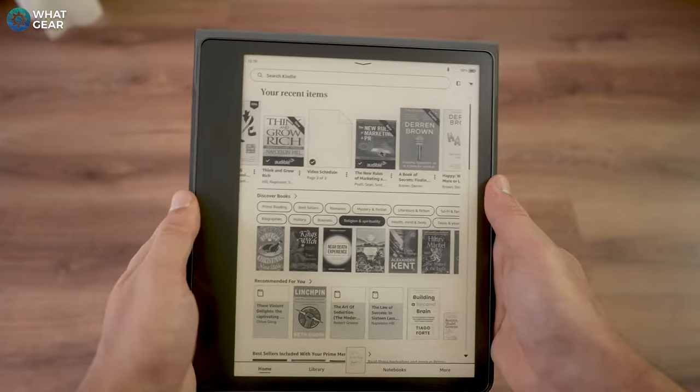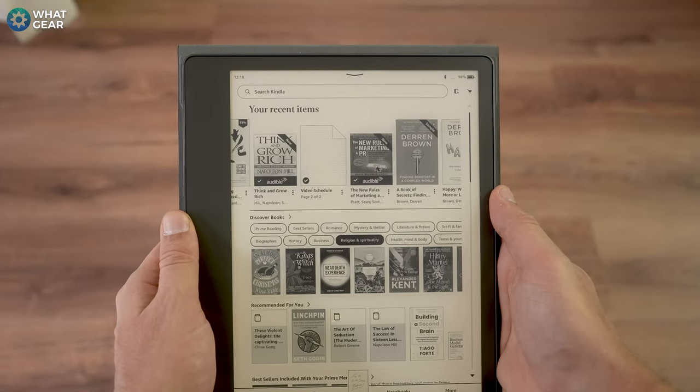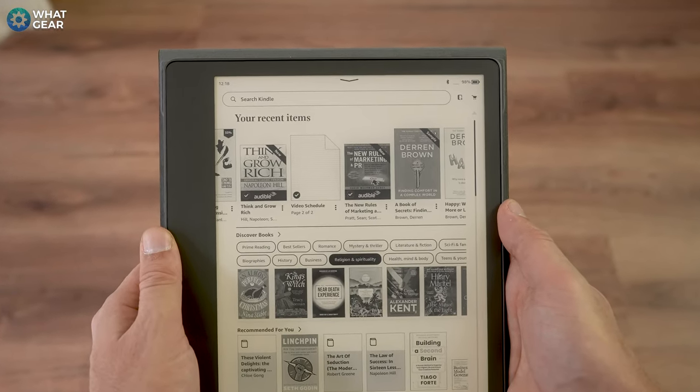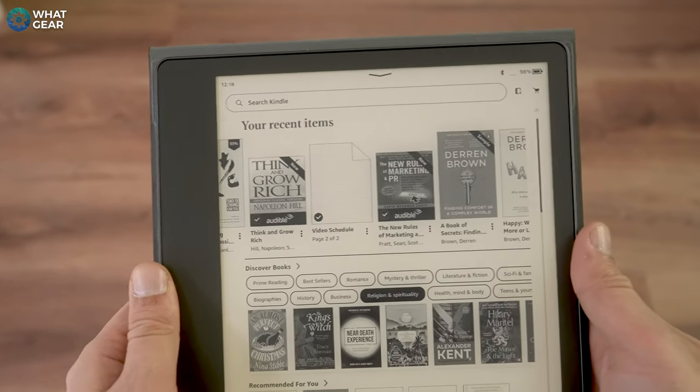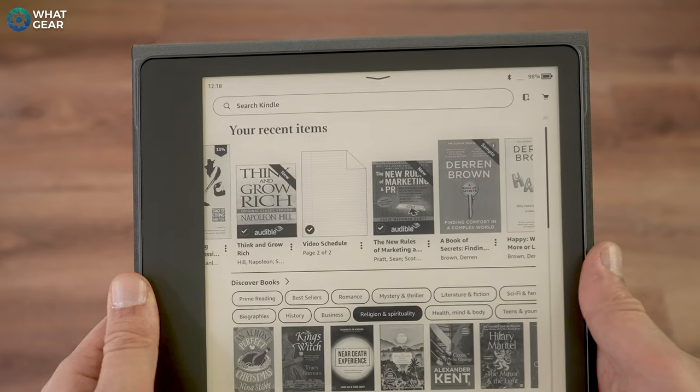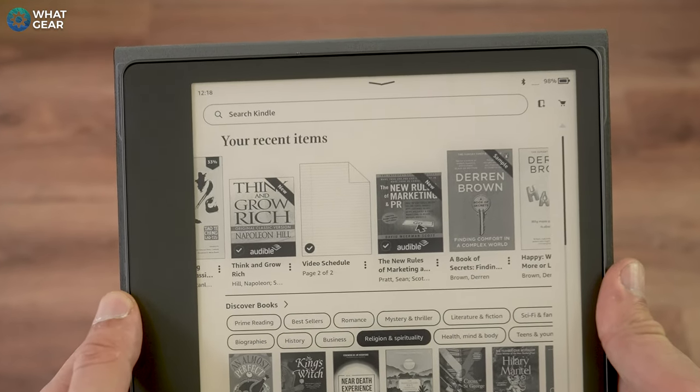Number two, the Kindle Scribe has 32 gigabytes of onboard storage which means you can download your audio books from Audible directly to it. And this brings me on to an advantage that the Kindle has. It's the ability to use Amazon's WhisperSync. If you haven't heard of this here's what it does.